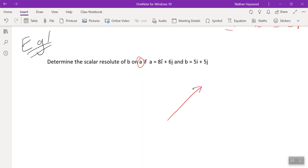So if this is B and this is A, we're doing B on A, so we're like pushing B onto A. We're finding the scalar resolute of B on A.